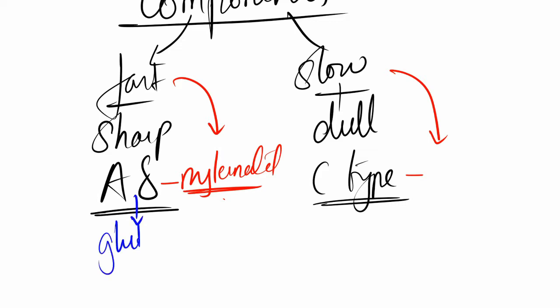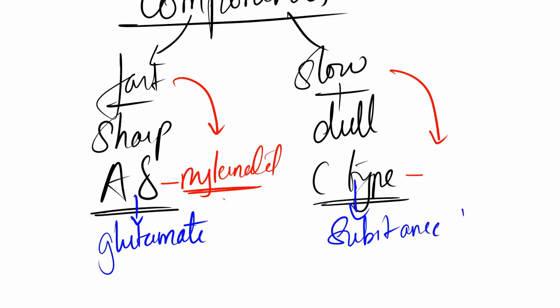The neurotransmitters: Aδ fibers are related to glutamate, and C-type fibers are related to Substance P. Glutamate and Substance P are compulsory to mention in any exam question about physiology of pain — along with gate control theory. There is no other way around it.